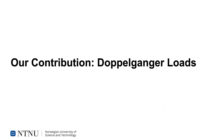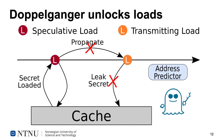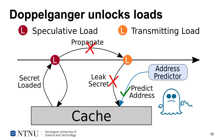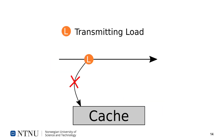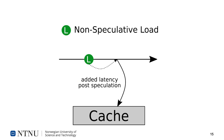Our contribution is a way to safely reclaim this lost MLP through the use of doppelganger loads. Using an address predictor, we securely predict the addresses. This enables us to perform otherwise blocked loads and regain memory level parallelism, thereby making Spectre sad. Normally, a blocked load has to wait until it is safe to execute before it can initiate its memory access, which incurs a latency penalty post-speculation and reduces MLP.